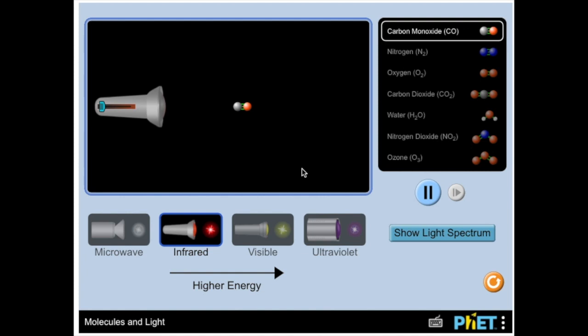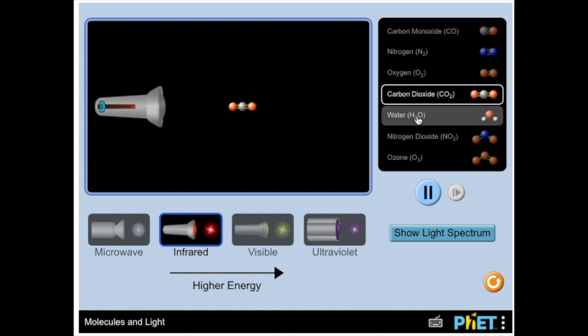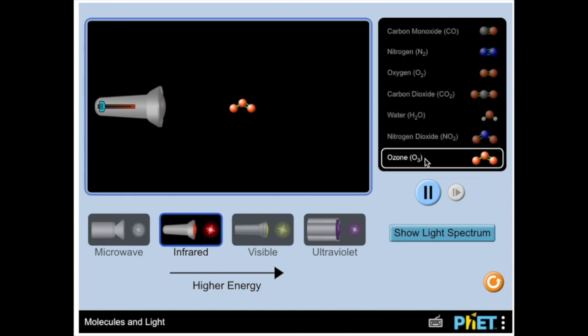Looking at our PhET simulation, you can see the different types of molecules: carbon monoxide, nitrogen, oxygen, carbon dioxide, water, nitrogen dioxide, and ozone off to the right.